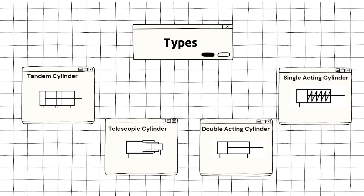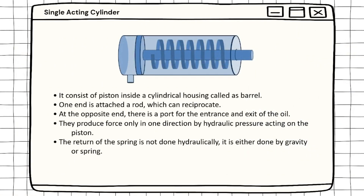Now I'm going to talk about single acting cylinder. In a single acting cylinder, it consists of a piston inside the cylindrical housing called a barrel. One end is attached to a rod. At the opposite end there is a port for the entrance and exit of the oil. They produce force only in one direction by hydraulic pressure acting on the piston. The return of the piston is not done hydraulically; it is either done by gravity or spring.